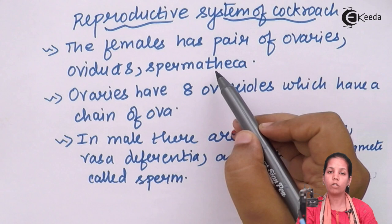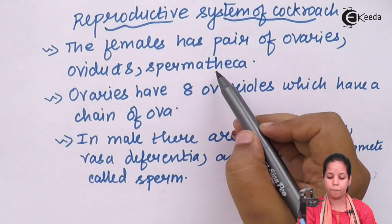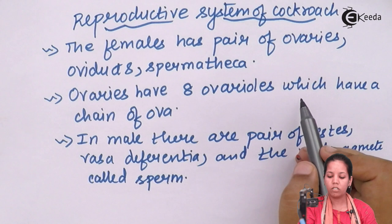Like in human beings the female reproductive gamete is egg, similarly in cockroaches it is spermatheca. Now ovaries have approximately six ovarioles, which are nothing but a chain of ova — the female reproductive system egg.